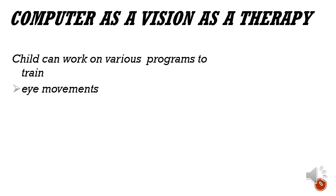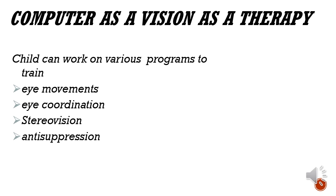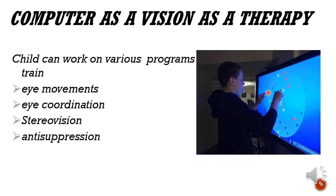Computer programs now offer advanced options. Children are often not very engaged with manual exercises, so games can be used. There are phone games such as Tetris blocks with an anaglyph - the patient wears anaglyph glasses and plays the game, giving MFBF exercises. Computer programs can train eye movement, eye coordination, stereo vision, and anti-suppression. In one demonstration, the patient performs eye-hand coordination tasks by touching specific dots with both hands as instructed, with the task becoming progressively more complex.